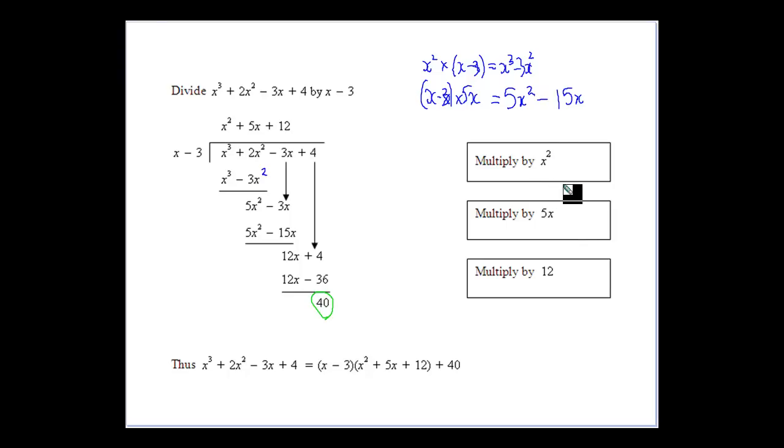So, we are multiplying to eliminate that term with the largest degree each time as we go through, until we get a remainder that's of a lesser degree than the divisor.